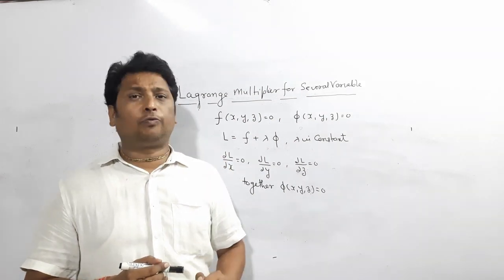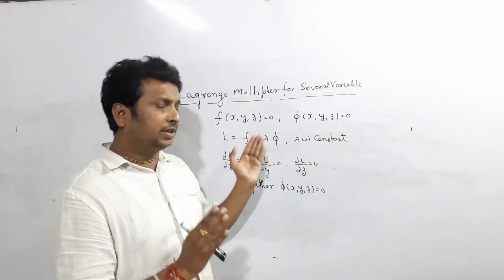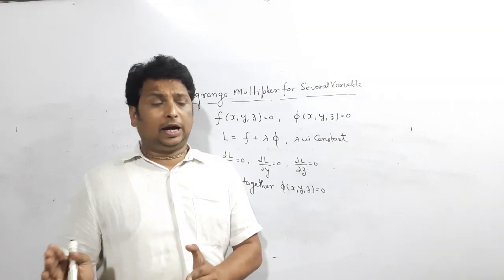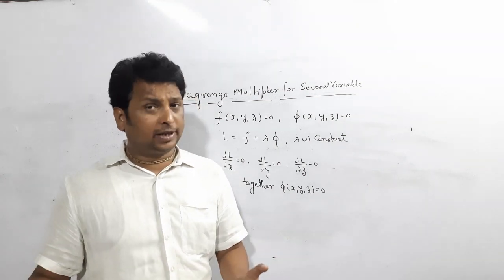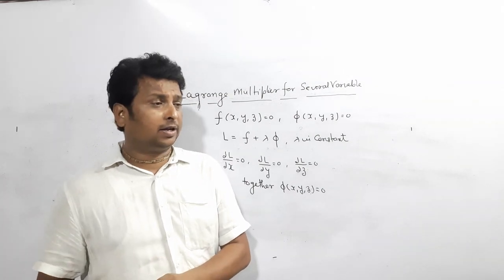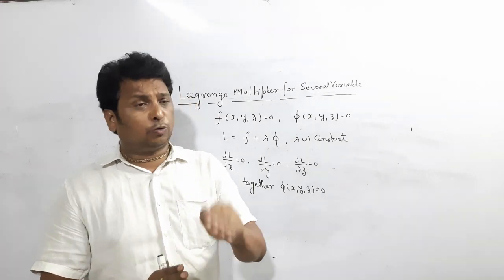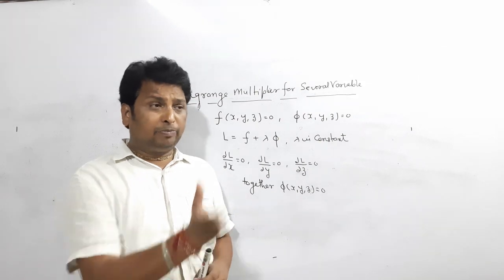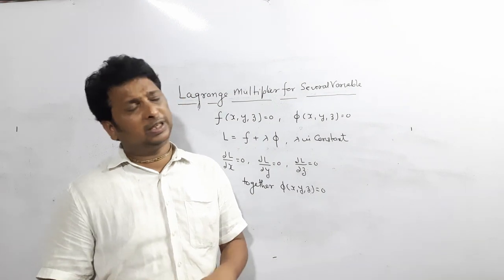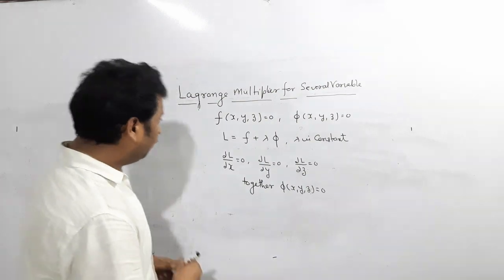Once you have the values of x, y, z, just substitute that value in f — that gives your maximum or minimum value. There is no method to check using the Lagrangian multiplier method whether this gives maxima or minima, but it is based on what the question asks. If they ask for the maximum value, it will give the maximum; if the question asks for minimum, it will give the minimum value.